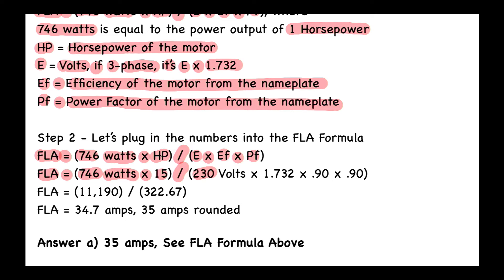1.732 is for three-phase. We're then going to multiply that by 0.90, and that was for the efficiency, and then we're going to multiply that by 0.90, and that's for the power factor.